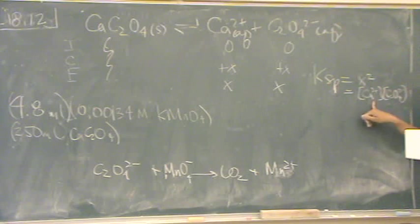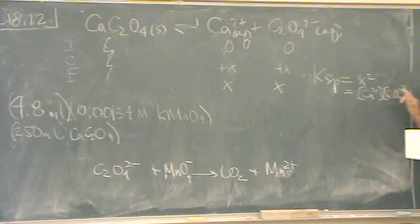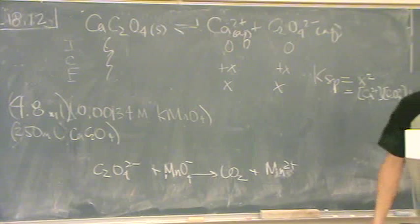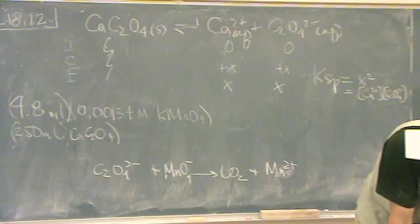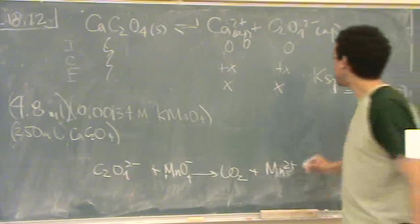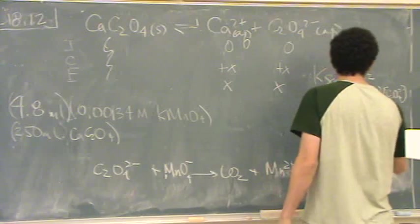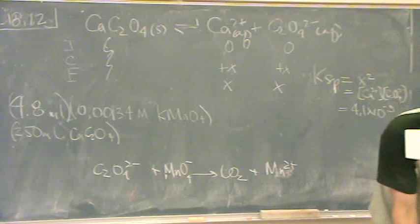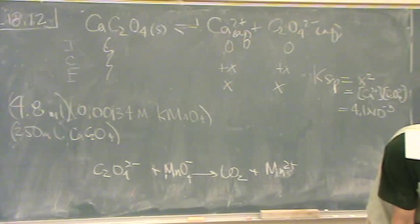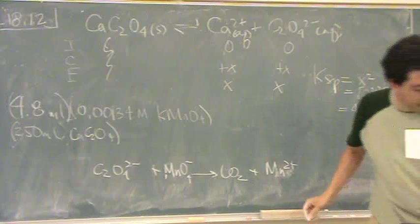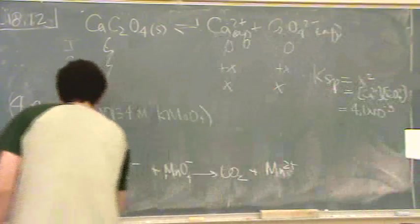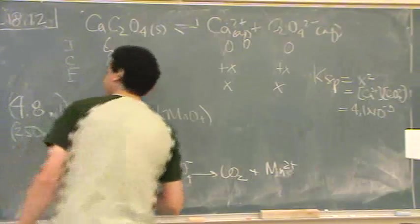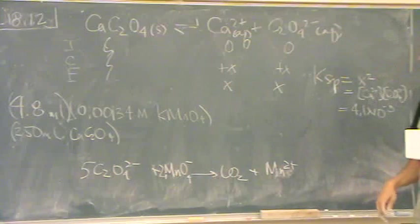Then you divide by the volume to get the molarity of the oxalate. That's this. This is equal to it. You square it, and that's Ksp. Does that kind of make sense? Okay. I'll give you the values if you need it. The final answer is going to be 4.1 times 10 to the -9. The ratio, the molar ratio that you're going to need, it's going to end up being a 5 and a 2. So that'll be a 5 and that'll be a 2 when you balance the redox. Is that okay?